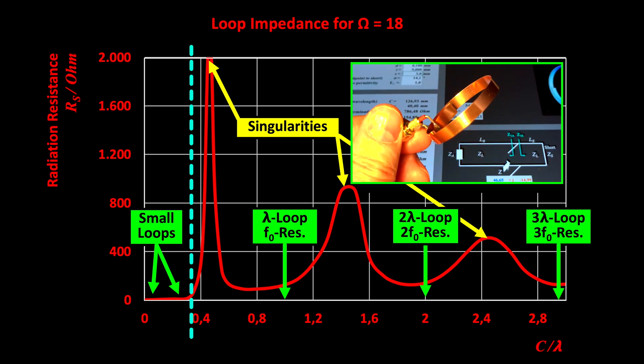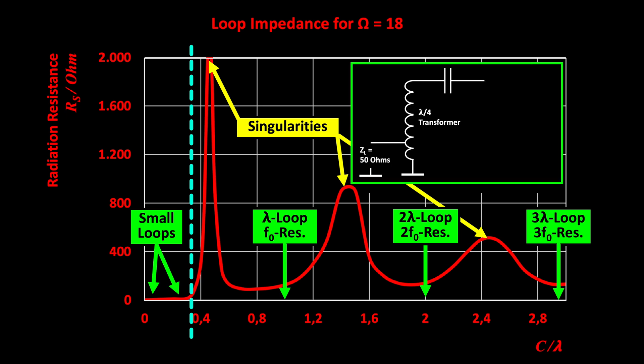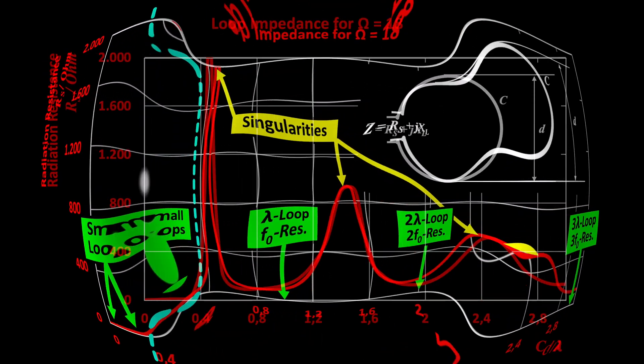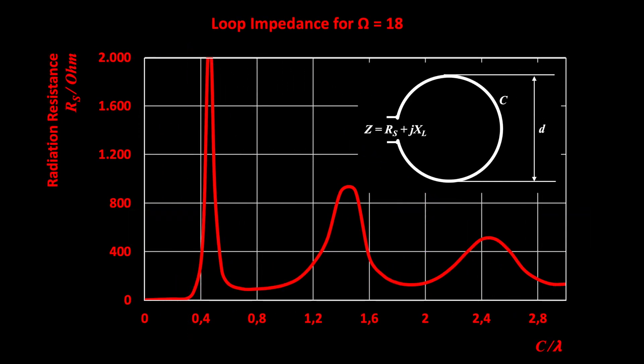Here is a special own development: A lambda loop with an integrated matching network consisting of a line transformer and a capacitive coupling. It's an important insight. We need different matching networks for different operating modes of loops.